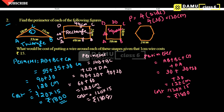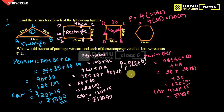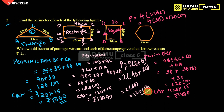Similarly for a rectangle, the perimeter formula is 2 into (L plus B), where length is 40 and breadth is 20. So 2 into 60 equals 120 centimeters. This is an alternate way to calculate the rectangle's perimeter.